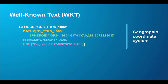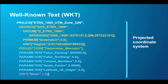For a projected coordinate system WKT, it contains the complete geographic coordinate system, plus the projected coordinate system name, the projection algorithm name (for example, Transverse Mercator), the parameters, and the linear unit. Note that many people use the word 'projection' when they really mean a coordinate system — a projection is actually the name of the algorithm.